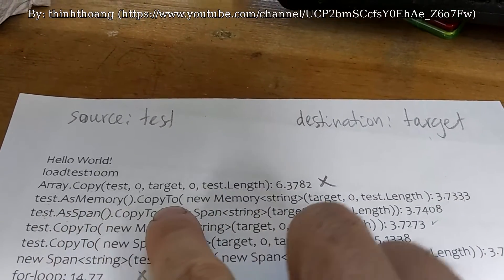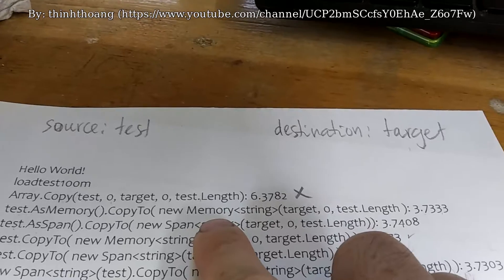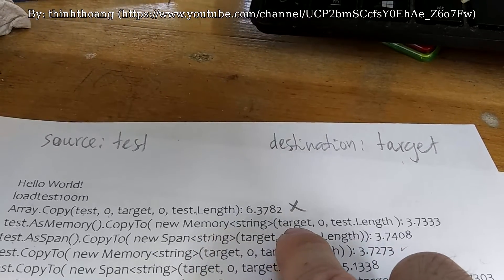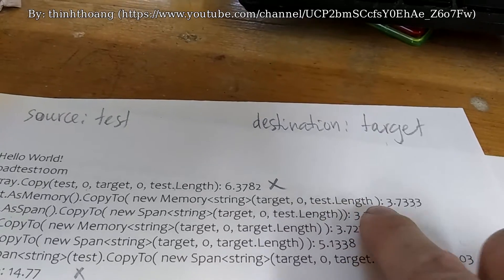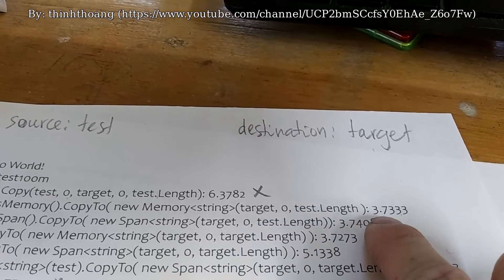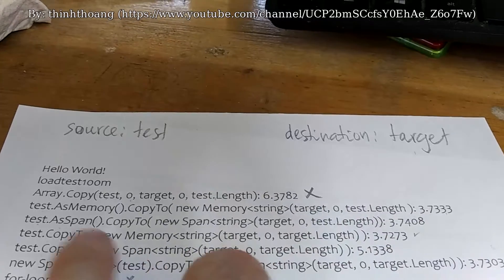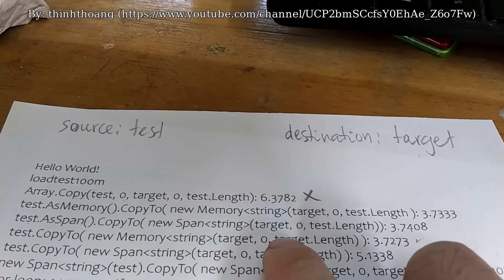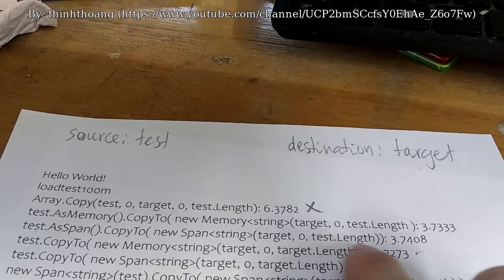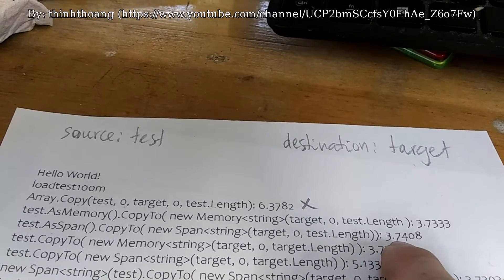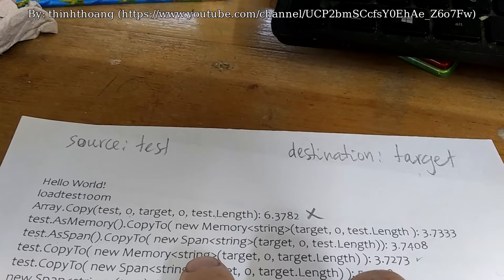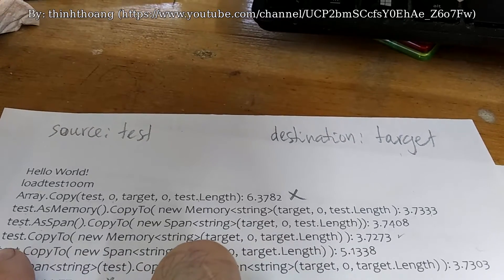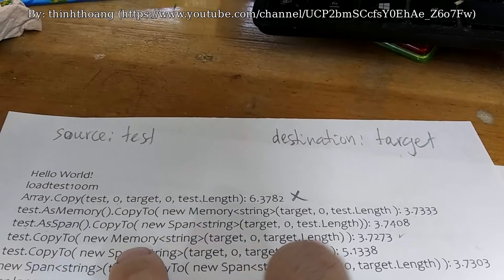Test.AsMemory().CopyTo() to a new memory built on the target array takes 3.73 milliseconds. Test.AsSpan().CopyTo() a span - a span is like a slice - test.CopyTo() new...